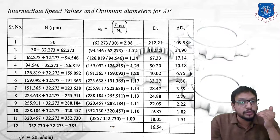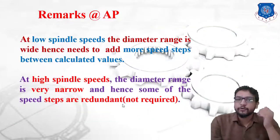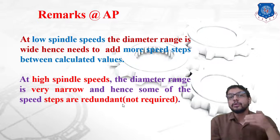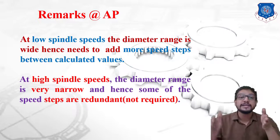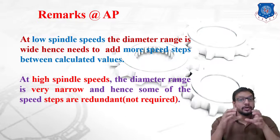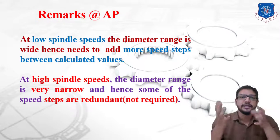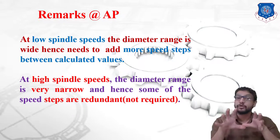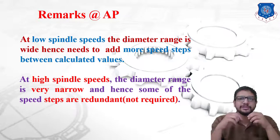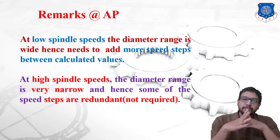In conclusion, for arithmetic progression: at lower spindle speeds the diameter range is very wide, so more speed steps are needed between calculated values. At higher spindle speeds, the diameter range is very narrow, making those spindle speed steps redundant. Therefore, arithmetic progression does not give the required speed distribution. In the next session, we will study geometric progression — until then, stay tuned and thank you all.